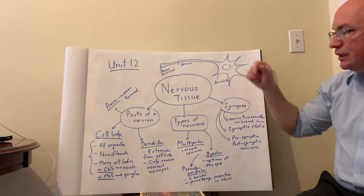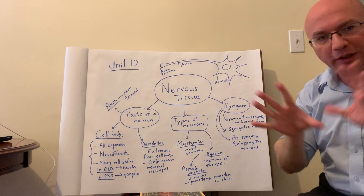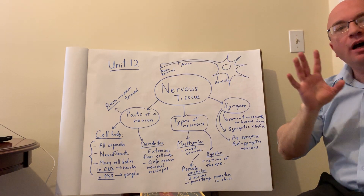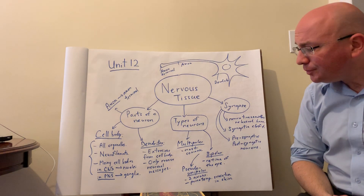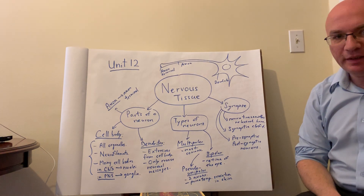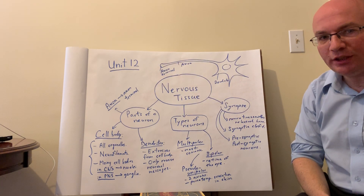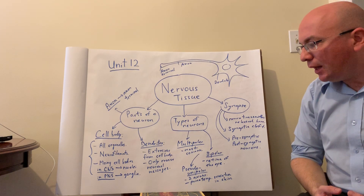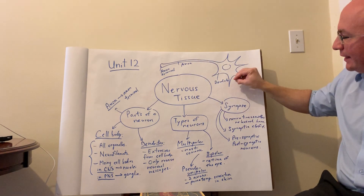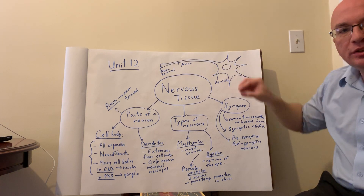For the dendrites, these are extensions coming out from the cell body — essentially branches like those of a tree, which is why they were named as such. They extend out in every direction, and many neurons have multiple dendrites, sometimes hundreds of them. Dendrites are the areas of the neuron that always only receive messages. The axon sends the message; a dendrite receives it. If this neuron was receiving a message from a different neuron, an axon terminal would be touching the dendrite, because dendrites receive the message.